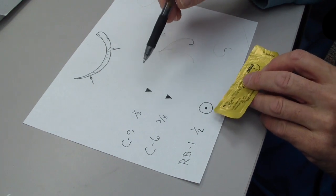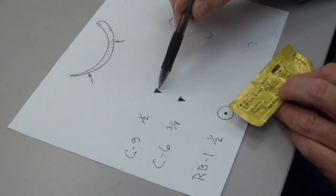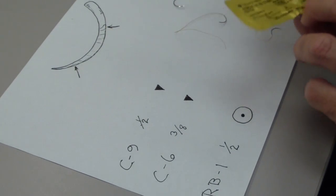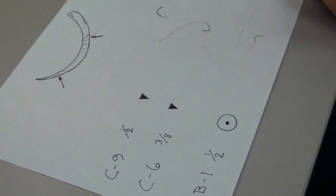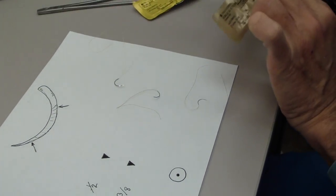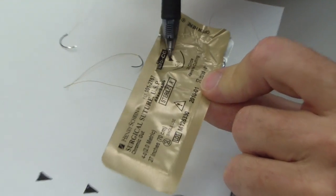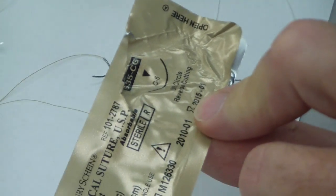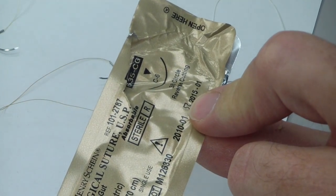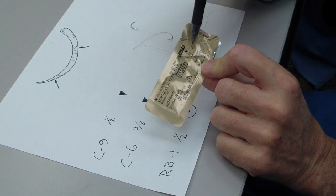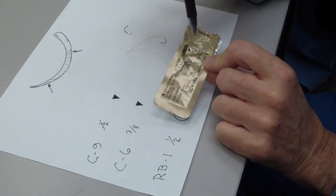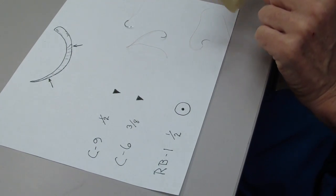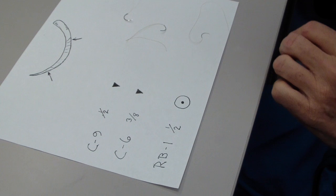So this is a C9 one-half circle and it's a reverse cutting. The other one we use quite frequently is a 3/8 circle C6 needle, and it's usually with surgical gut or chromic gut. Again, it's marked. It'll have a marking right on it—it'll say C6 3/8 circle reverse cutting.